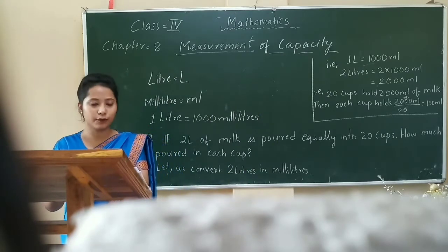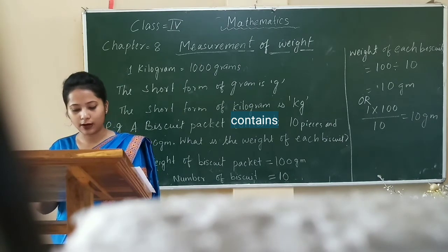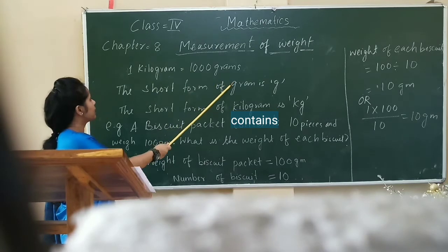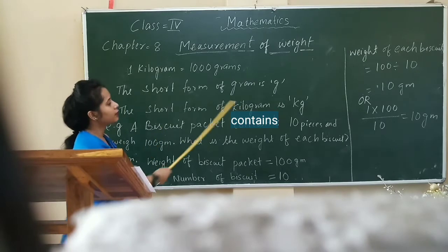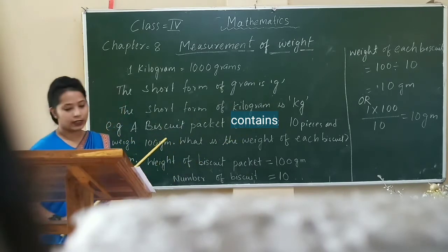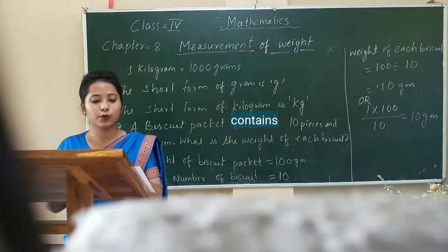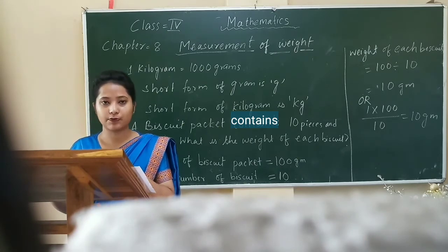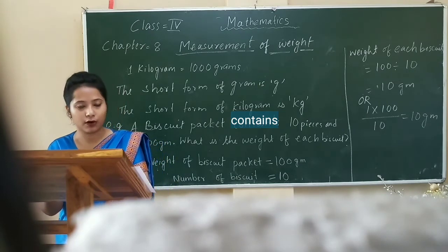Now, measurement of weight. The standard unit of weight is gram. The multiple of weight is kilogram. 1 kilogram equals 1000 grams. The short form of gram is g, and the short form of kilogram is kg. We use the following instruments to weigh an object: hand balance, table balance, and spring balance, etc. We can see these in our nearby shop or in the market.